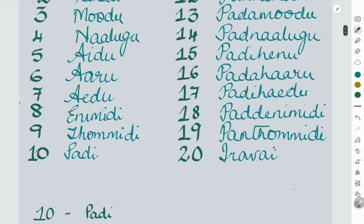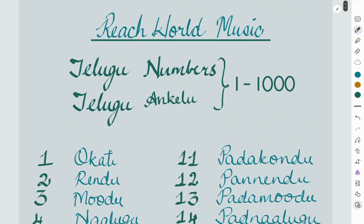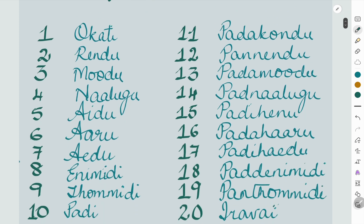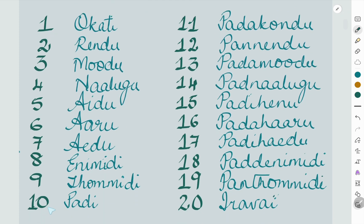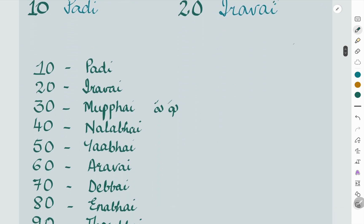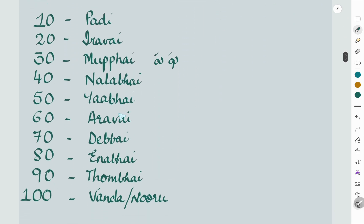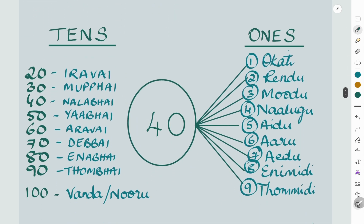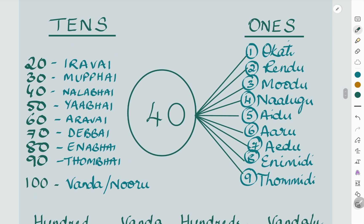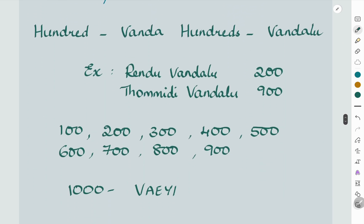So if you look at this, it is an easy pattern. For 1 to 1000, we definitely need to learn 1 to 10 very well because this is what the rest of the numbers depend upon. Even 11 to 20, just as in English, is a little different from 21 to 99. Once you learn these, you come to the tens: padi, iravai, mukbhai, nalabhai, yaabhai, arabhai, debbhai, enabhai, tumbhai, vanda. Once you know 100, you can add the tens to the ones to get up to 100, and then 100 to 900, and ten hundred is 'veyi'.